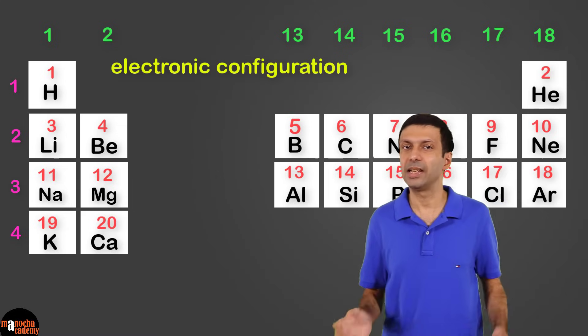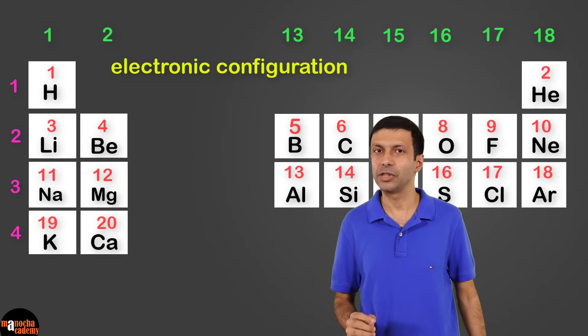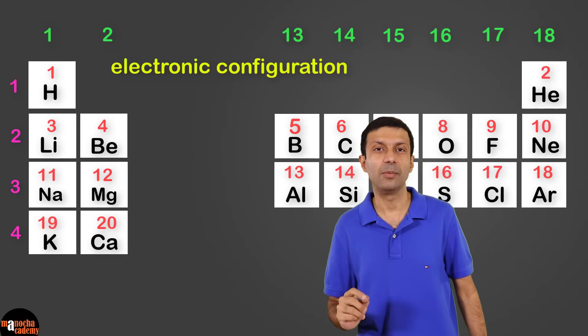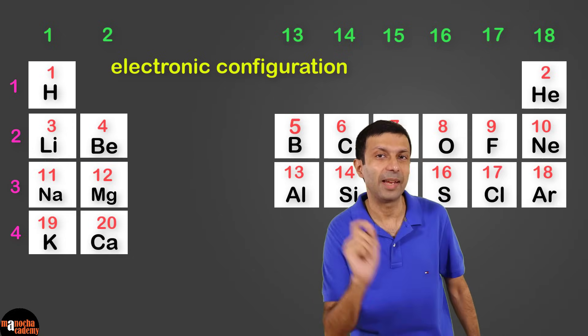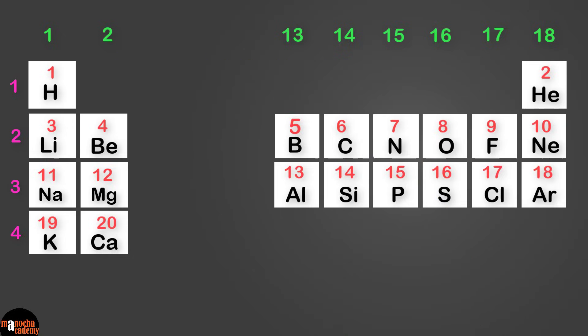Well, the answer lies in how the electrons are arranged in the atom, that is the electronic configuration. So let's go ahead and analyze the electronic configuration of elements in the same group.